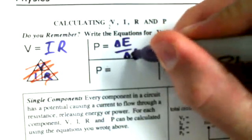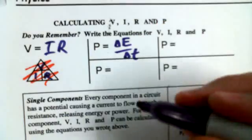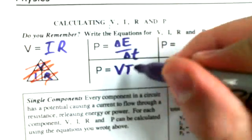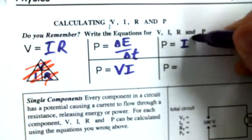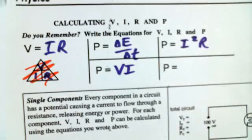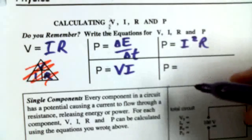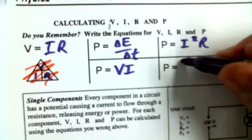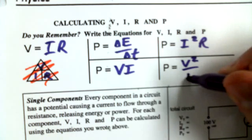Power is equal to delta E over delta T. Power is equal to V times I. Power is equal to I squared R. And power is equal to V squared over R.